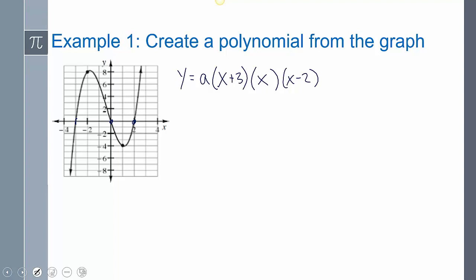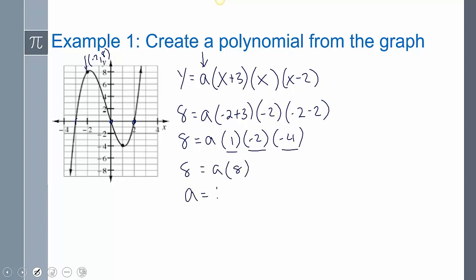Now the second step is I need to find what this A is. To find the A, I have to plug in a point. It gives me one right here. That point is negative two, eight. So I'm going to plug in eight for Y and negative two for every single X. Now I just need to simplify this. I get eight equals A times one times negative two times negative four. So multiplying those, that's going to give me eight. Divided both sides by eight, I get A equals one.